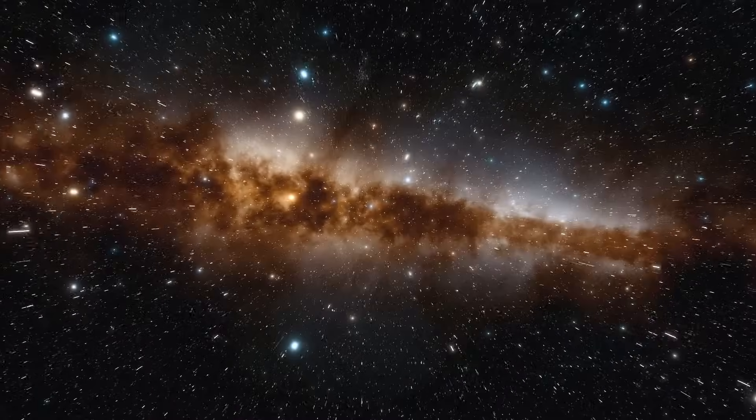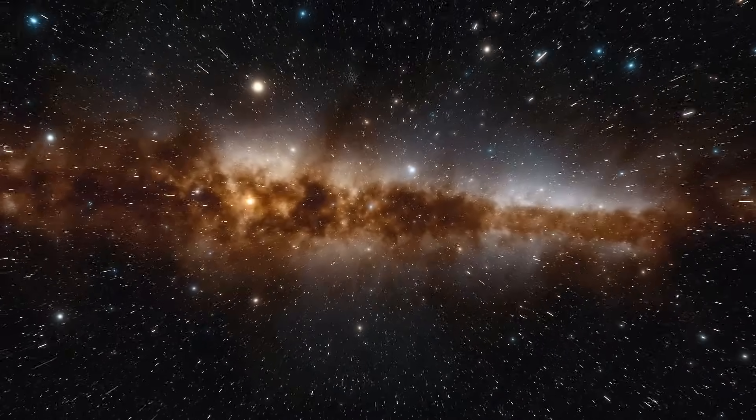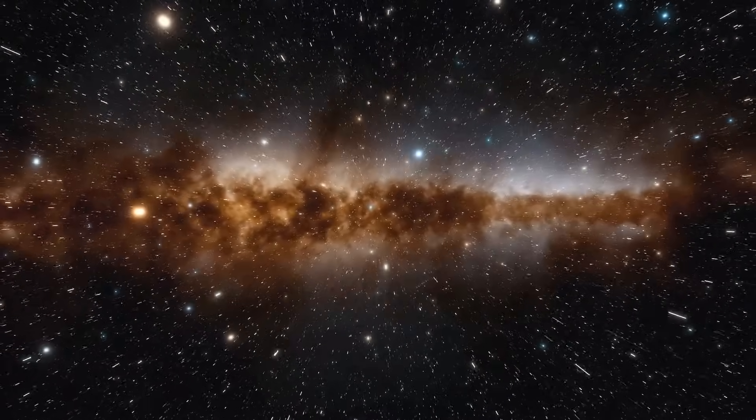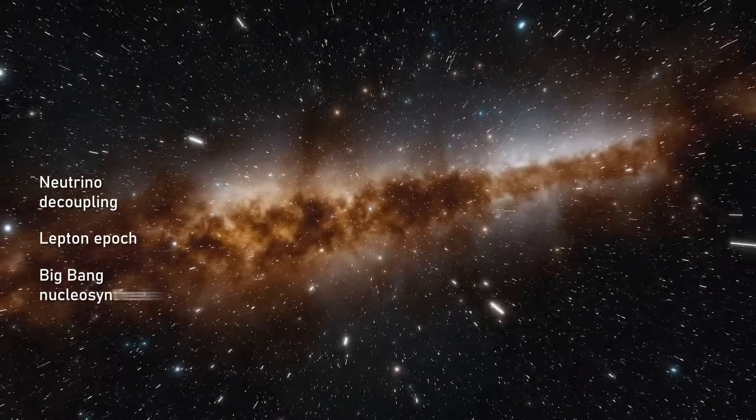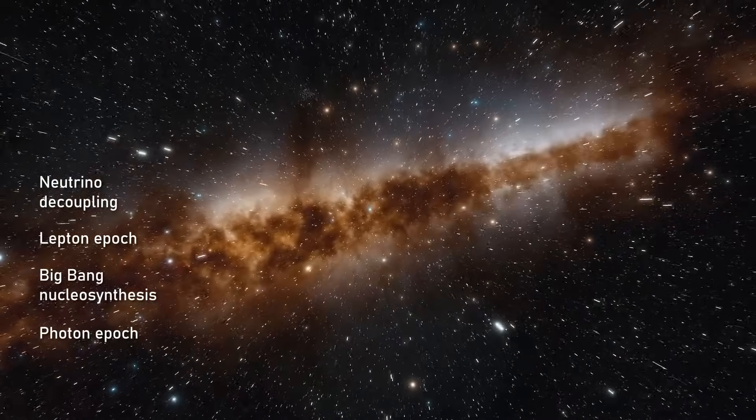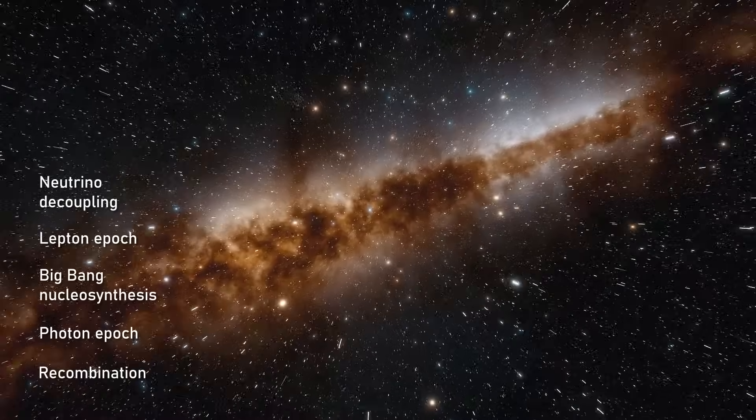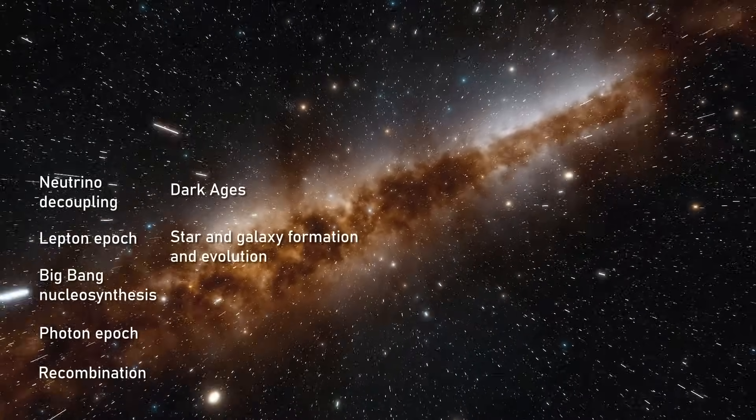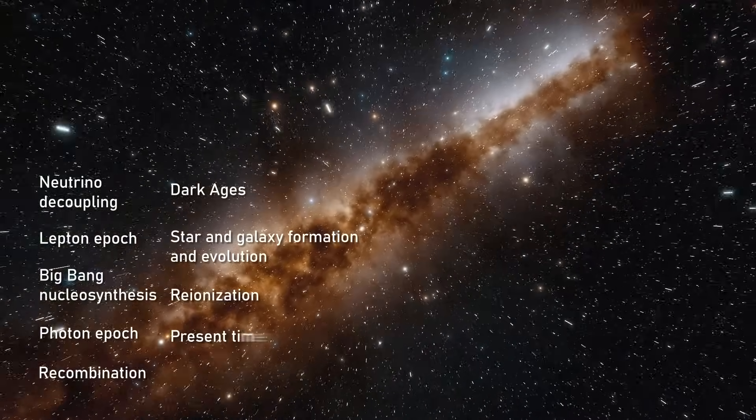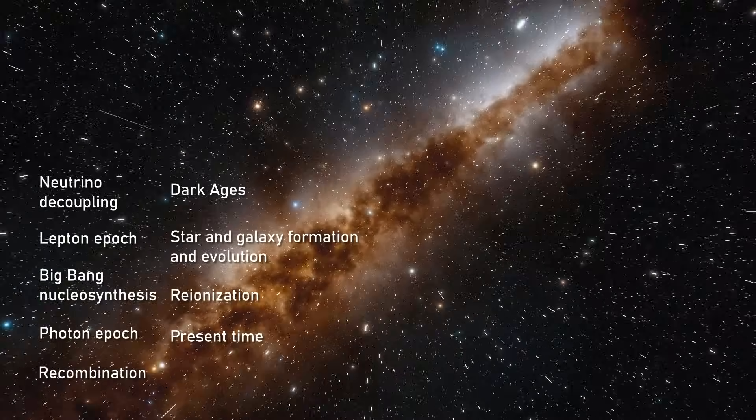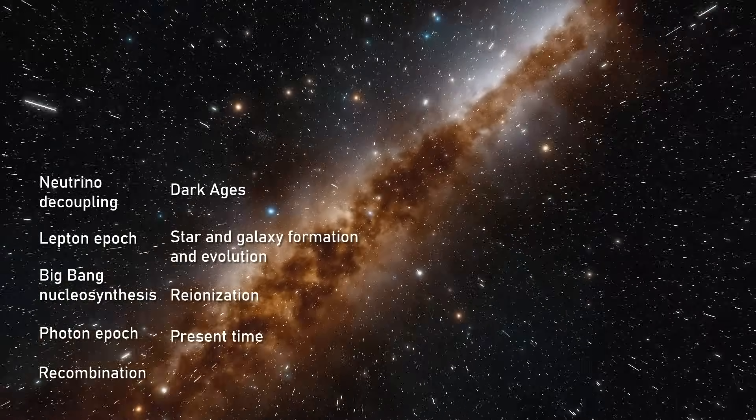We have covered a lot in the early stages of the universe's evolution, but we still have a long way to go, including the epoch of neutrino decoupling, the lepton epoch, the big bang nucleosynthesis, the photon epoch, recombination, the dark ages, star and galaxy formation and evolution, re-ionization and finally the present time. But we will do them justice and cover them extensively in another video.